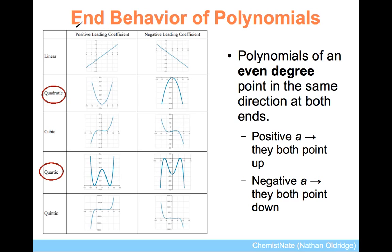Now, the end behavior of polynomials is something you will have to learn and memorize. Polynomials of an even degree, that means x squared, and you'll recognize these as parabolas, or x to the 4 quartic functions, will point in the same direction as x approaches negative and positive infinity. If it points up on the left, it points up on the right, and if it points down to the left, it will point down to the right.